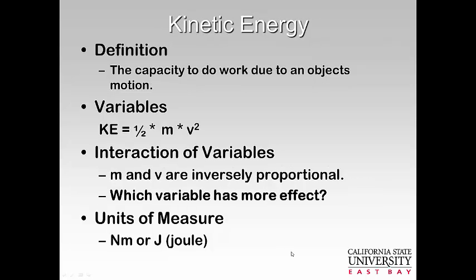Kinetic energy is very similar to momentum — it is the capacity to do work due to an object's motion. The equation is one-half mv squared. Compared to momentum (mass times velocity), kinetic energy has a velocity squared term. Mass and velocity are inversely proportional, but velocity has more effect since it is raised to the square power. The units are again a joule.